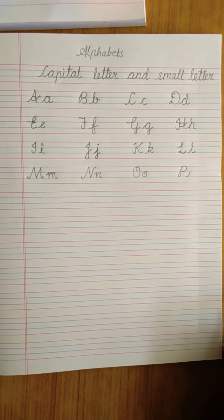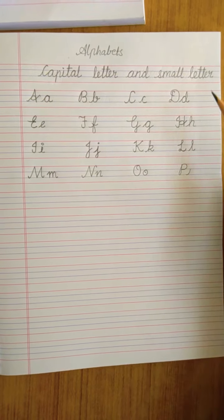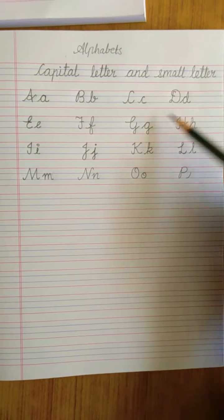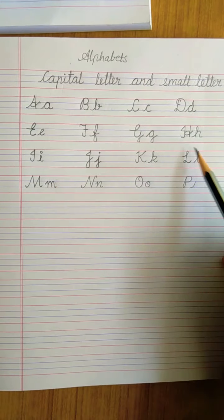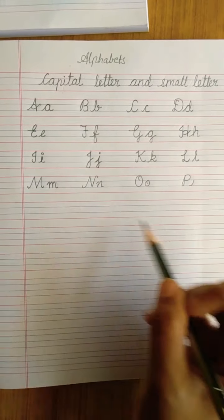Good morning students. In the previous YouTube link, in the previous video, we have completed alphabets writing - capital letter and small letter. Kids, we have seen to write capital A till L. In this video we will be writing the remaining letters.